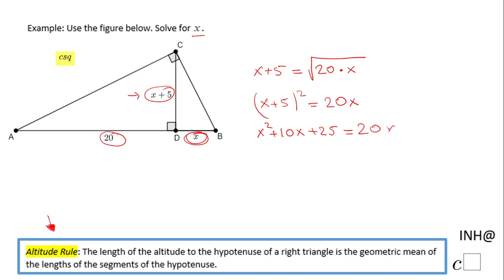We have a quadratic equation, so we need to make it equal to zero. I'm going to subtract 20x on both sides and we have x squared minus 10x plus 25 equals zero. And we have several ways to solve this quadratic equation.